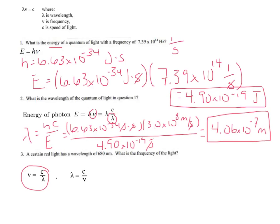And for the last problem here, number 3, a certain red light has a wavelength of 680 nanometers. What is the frequency of this light? So we're looking for frequency, which means we're using this equation again.